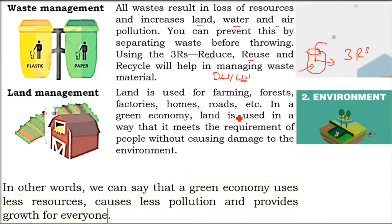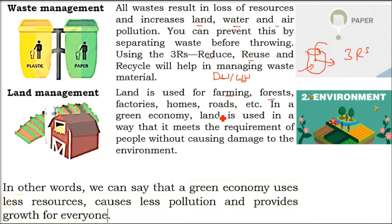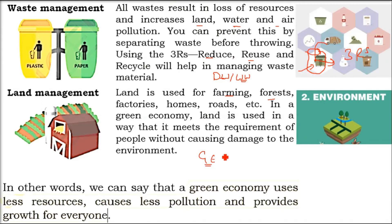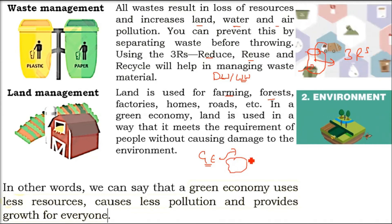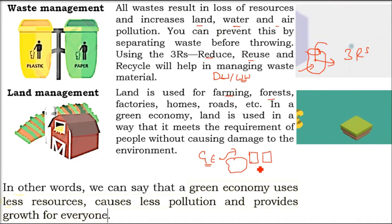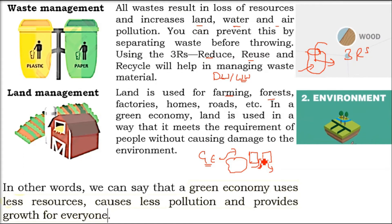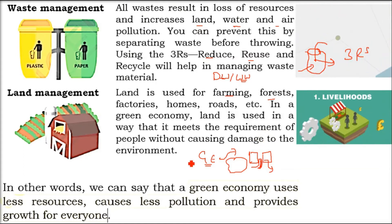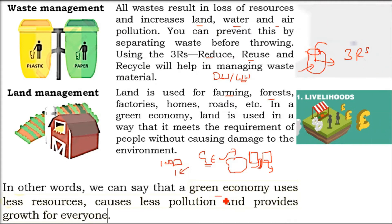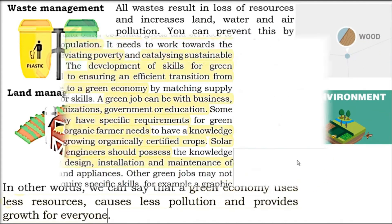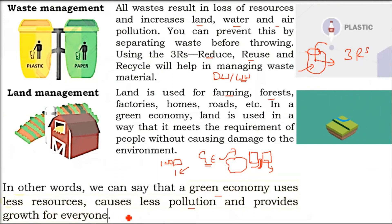Land management: we use land for living, working, agriculture, making homes, roads, forests, and factories. Land is limited — the earth's circumference and periphery are limited. Use it very judiciously. Everyone's requirements must be met and the environment should not be damaged. One person living in 100 acres while 100 people live in one acre should not be the case. Green economy is all about using less resources, causing less pollution, for everyone's growth.